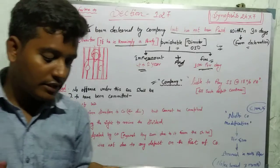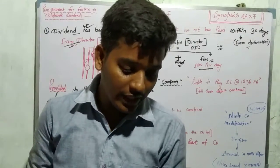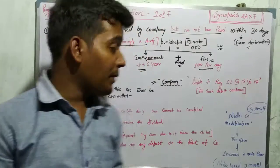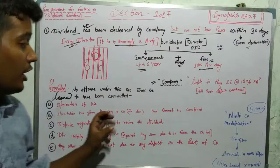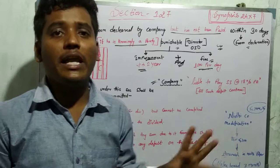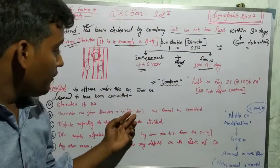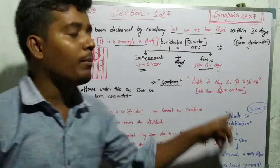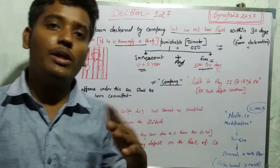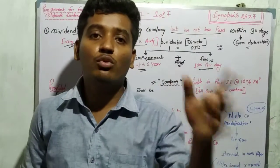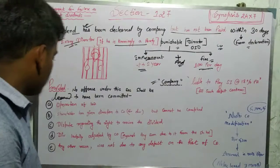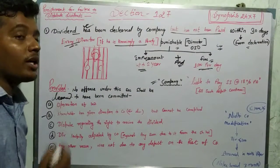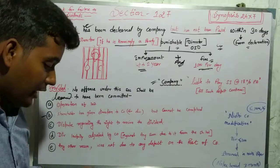Second, where a shareholder has given direction to the company about which account to credit. If the shareholder is giving the company direction about bank account details, IFSC code, or other details, and the company has a default in receiving proper information, then no penalty applies.